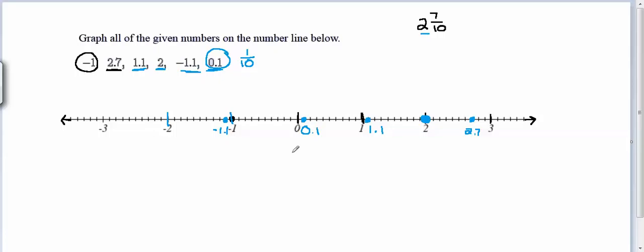To check your answer here, make sure you didn't miss anything. Count up the number of points you've graphed. We've got 1, 2, 3, 4, 5, 6 points graphed, and there are 1, 2, 3, 4, 5, 6 numbers.